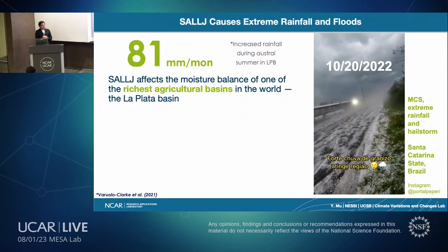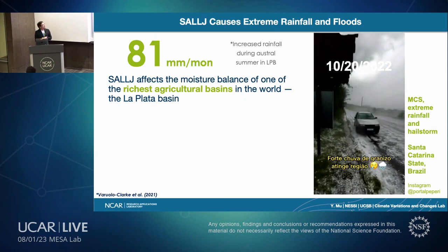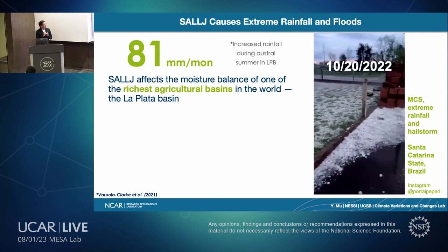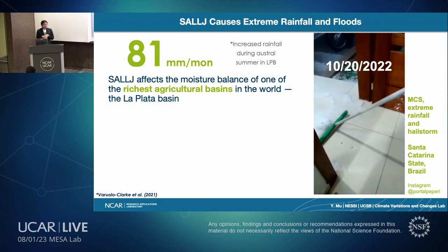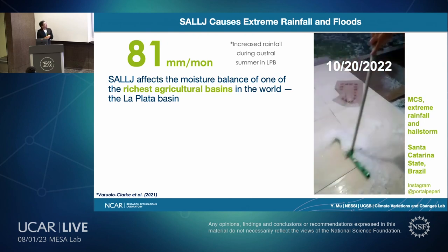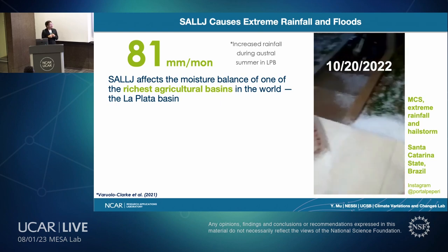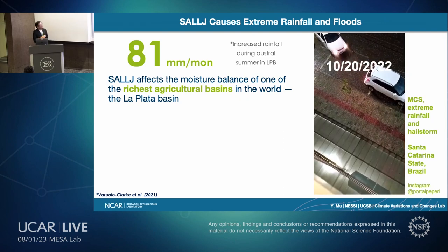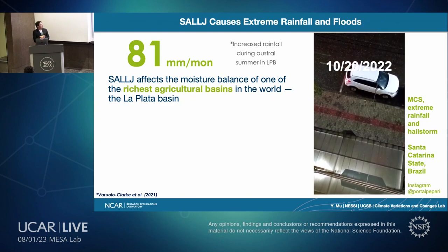Why do we care about SALLJ? The La Plata Basin is one of the richest agricultural basins in the world, and SALLJ can affect its moisture balance through moisture transport. A recent study shows there is increasing rainfall during austral summer when the low-level jet is most frequent, from November to March. On the right is shown an extreme rainfall event caused by the low-level jet in Santa Catarina state in Brazil.